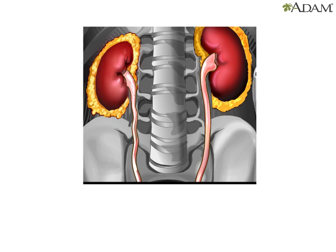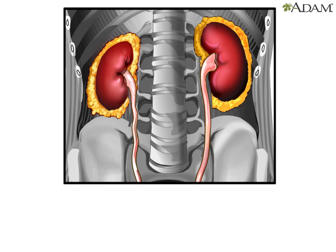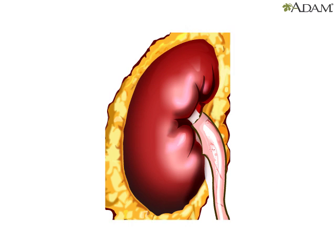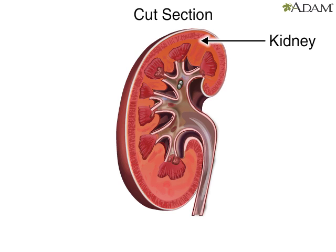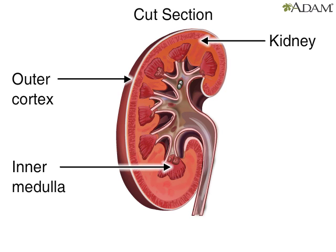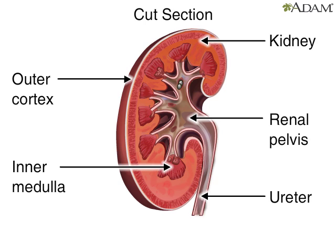Now let's enlarge the kidney to get a closer view. Here's a cross-section of the kidney. Urine flows from the outer cortex to the inner medulla. The renal pelvis is the funnel through which urine exits the kidney and enters the ureter.